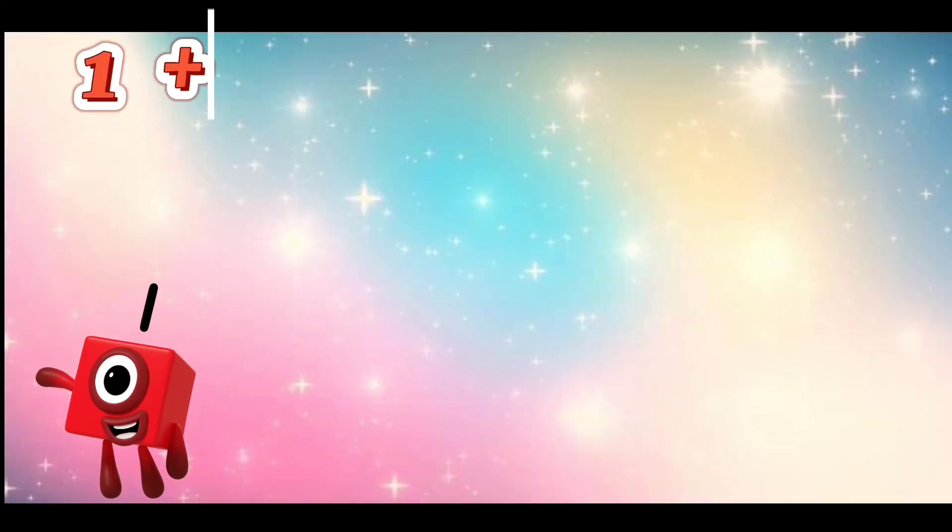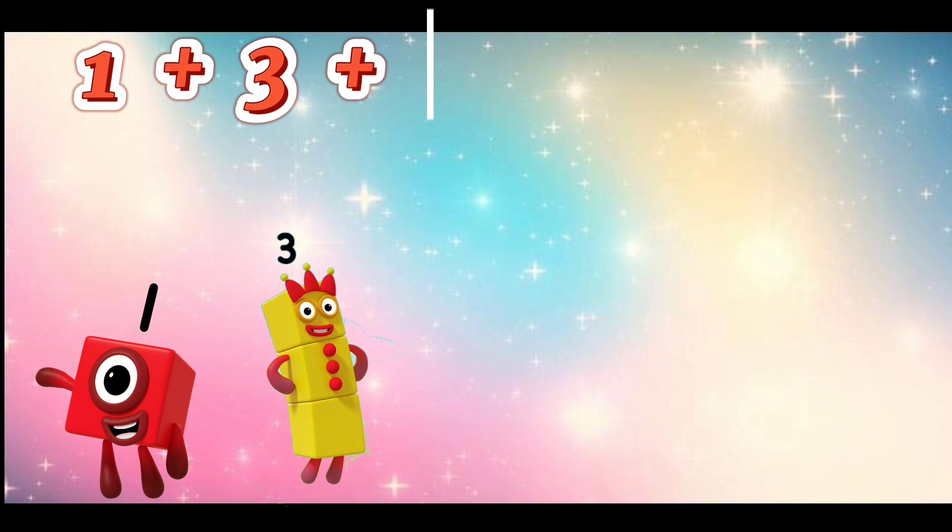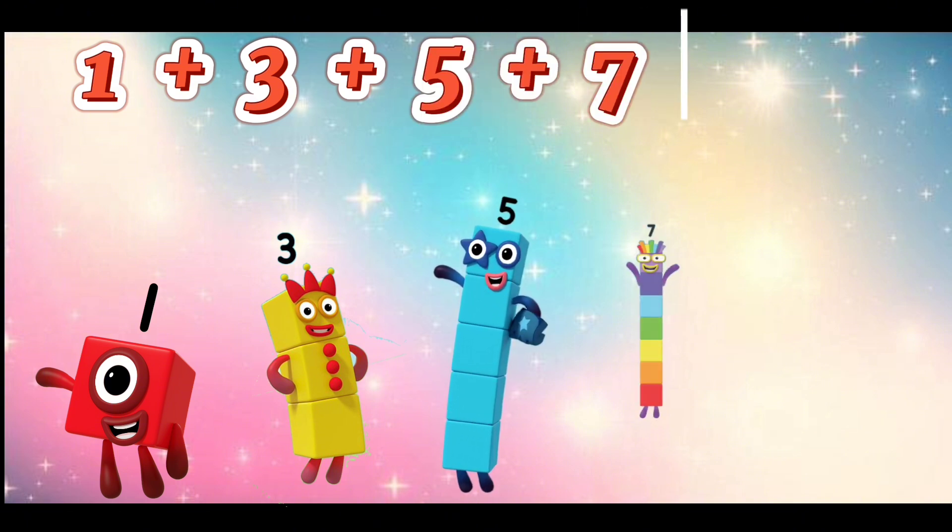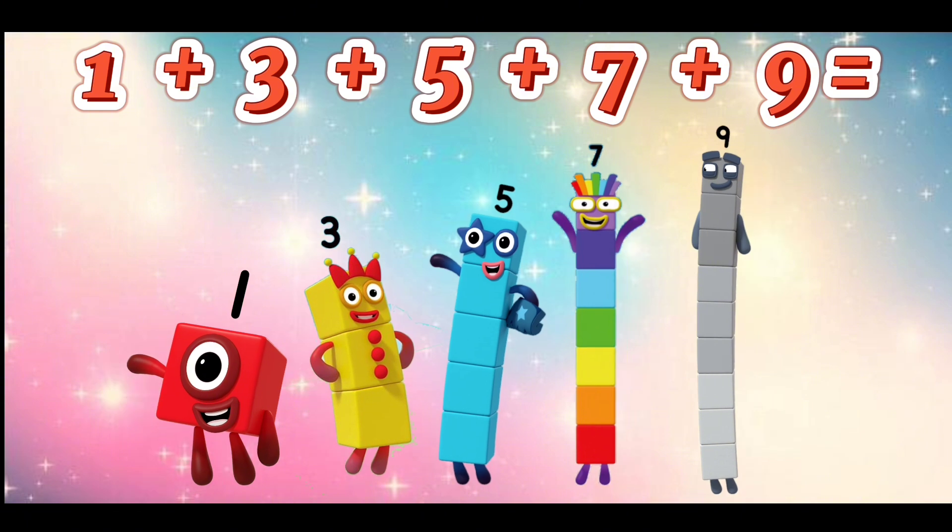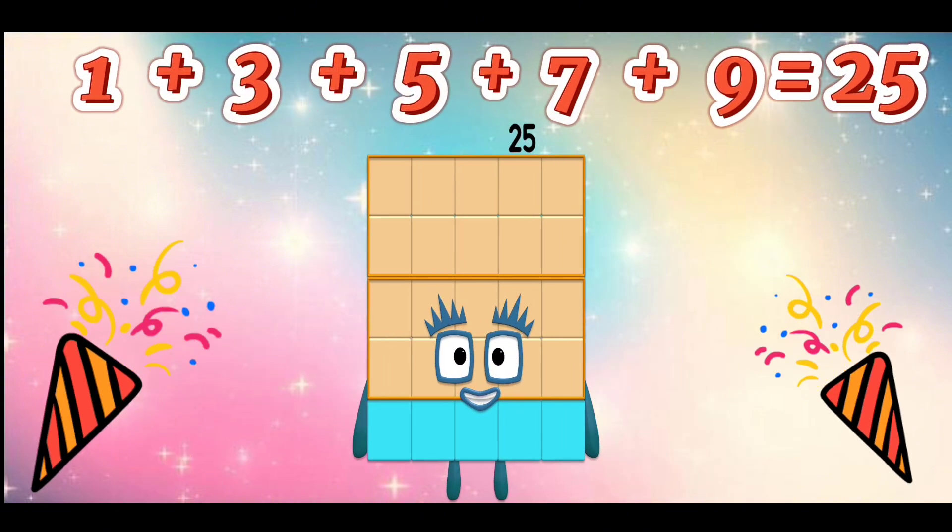1 plus 3 plus 5 plus 7 plus 9 is equal to 25.